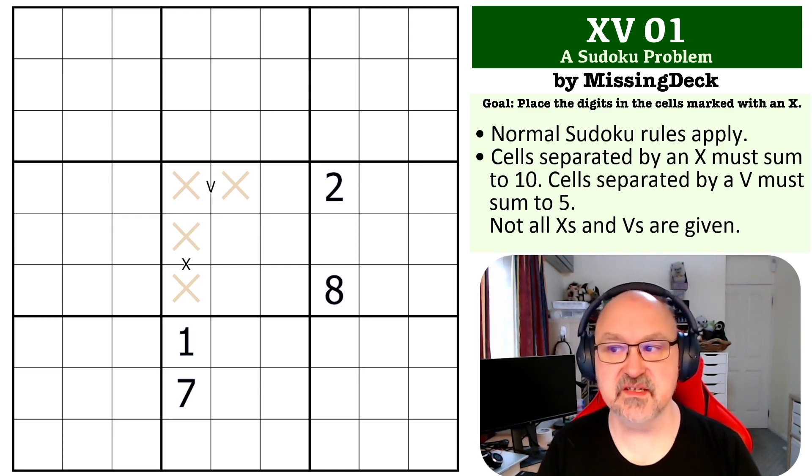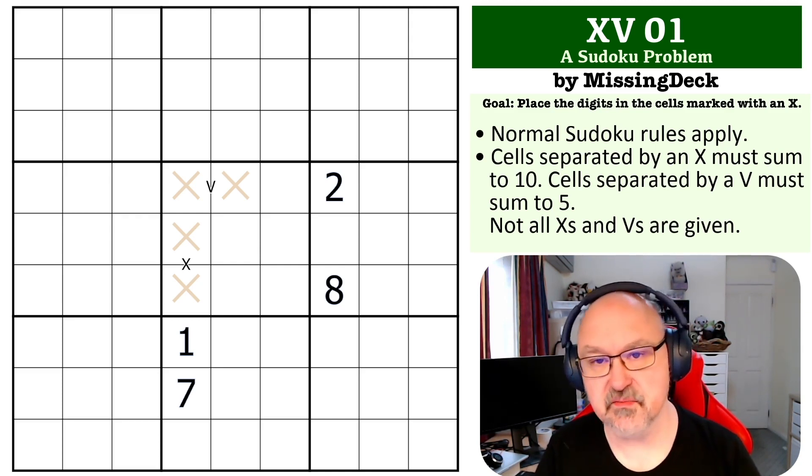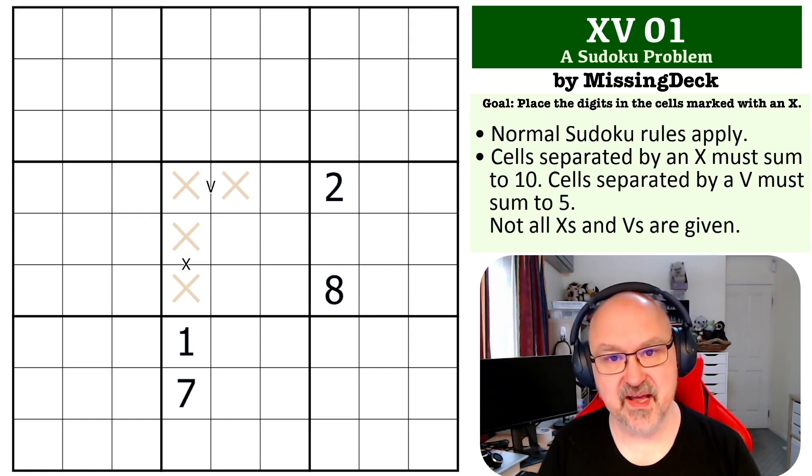So the way this works is, of course, the normal Sudoku rules apply. Cells separated by a V must contain digits that sum to 5. Cells separated by an X must contain digits that sum to 10. And of course, the goal is to place the digits in the cells marked with an X. Different Xs there, but it should be clear what we mean.